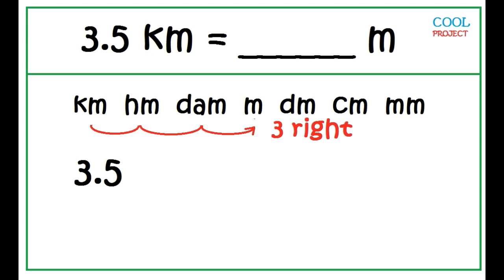To convert, just move the decimal point 3 units to the right also: 1, 2, 3. Then add two zeros. 3.5 kilometers is equal to 3,500 meters.